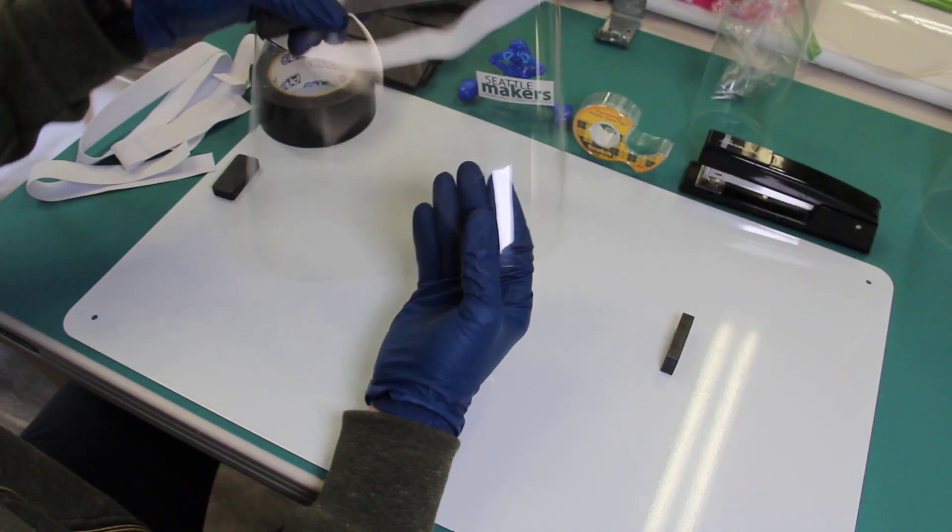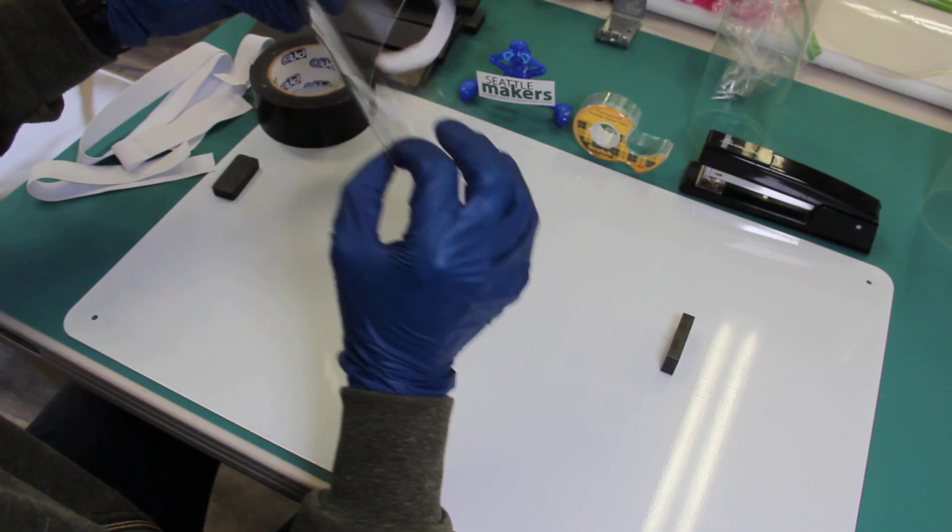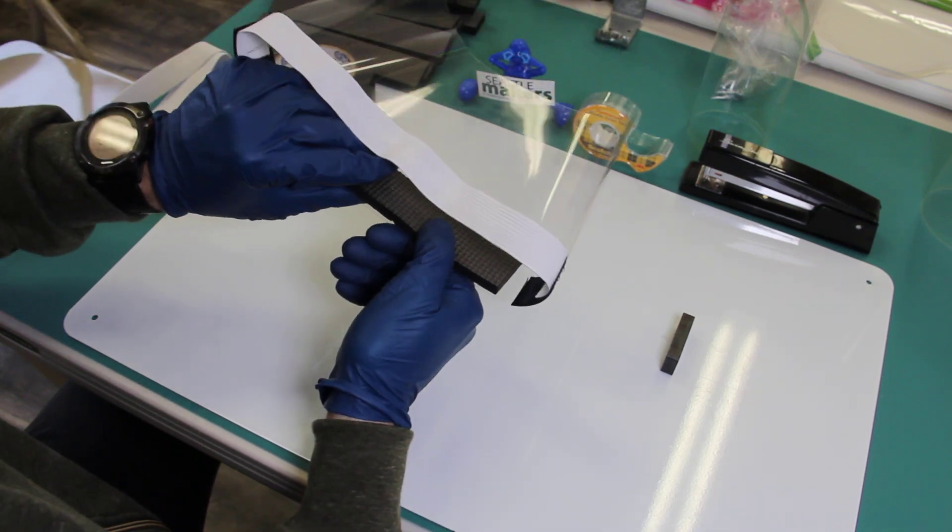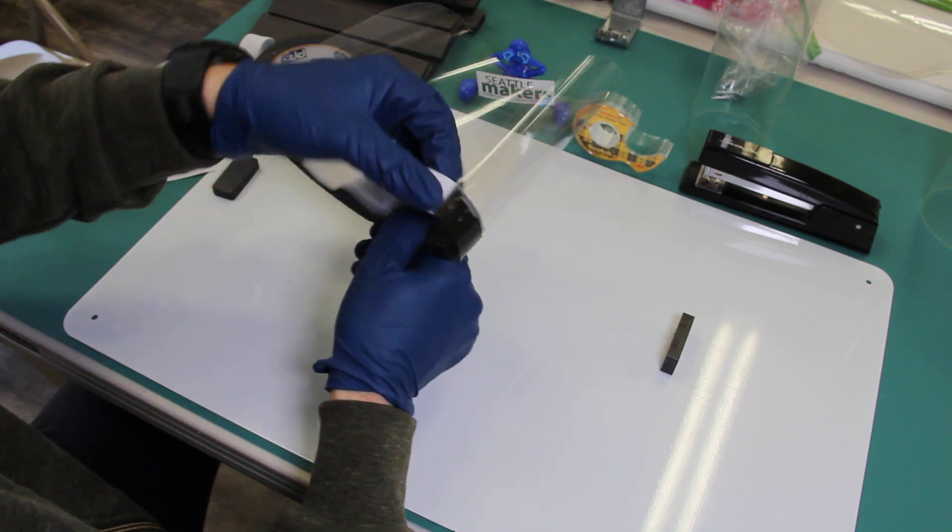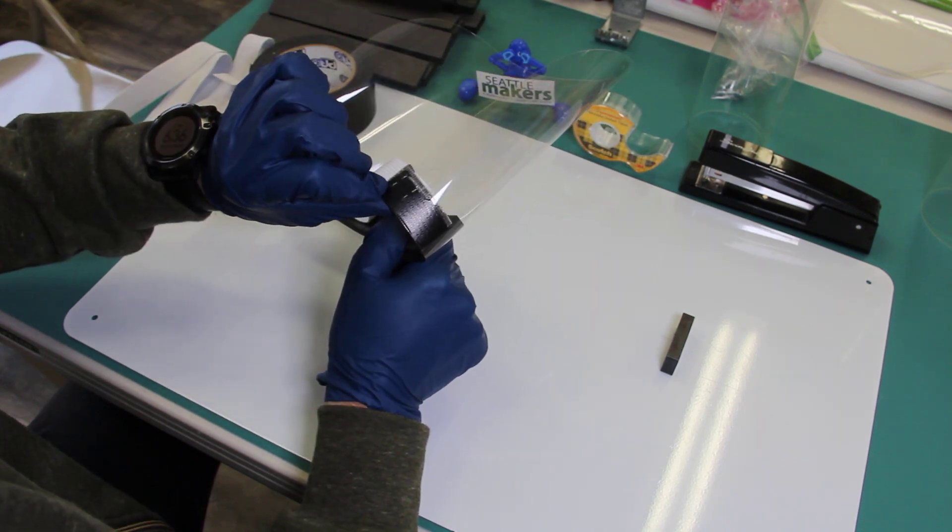So these are made from .007 inch Mylar sheet, EVA foam for the top part, one inch elastic, some duct tape, and a couple of staples.